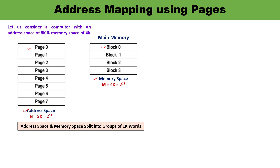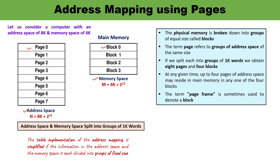Address space and memory space must be split into equal-size groups. Programs are split into pages, and the portion of the program to be moved from auxiliary memory to main memory is called a page. A page frame is also related to a block — a block is also denoted as a page frame. In this example, address space is 8k, memory space is 4k, and both are divided into groups of 1k words.